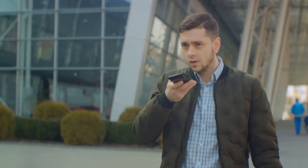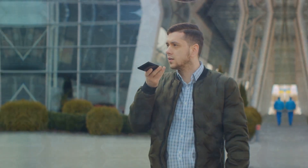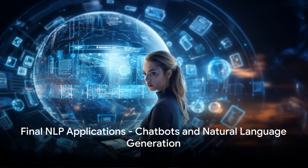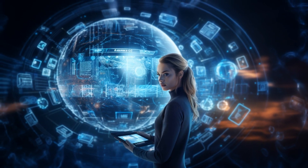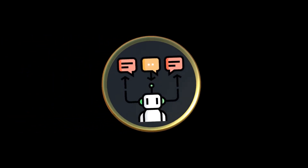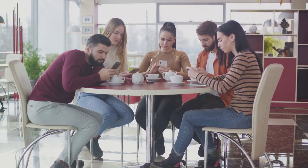Then there's text classification, which categorizes text into predefined groups — like sorting your toys into bins. Speech recognition converts spoken language into written form, so if you've ever used a voice assistant, you've used speech recognition. Finally, we have chatbots that simulate human conversation, and natural language generation, where computers generate text independently.